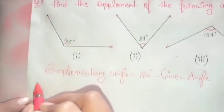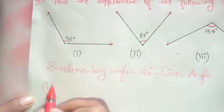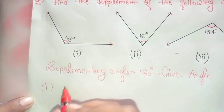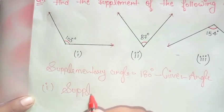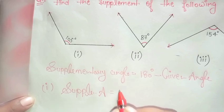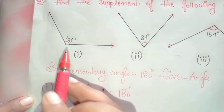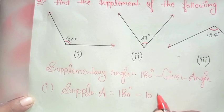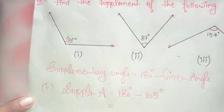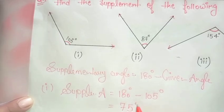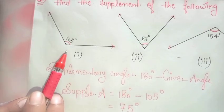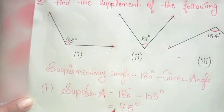Now come to the first question of part 2: you have to find the supplement of 105 degrees. The formula is 180 degrees minus the given angle, and the given angle is 105 degrees. So subtract 105 from 180 degrees — what you will get is 75 degrees. It means the supplement of 105 degrees is 75 degrees.